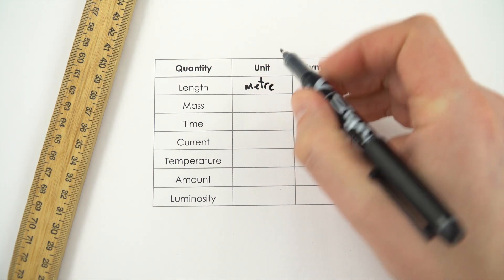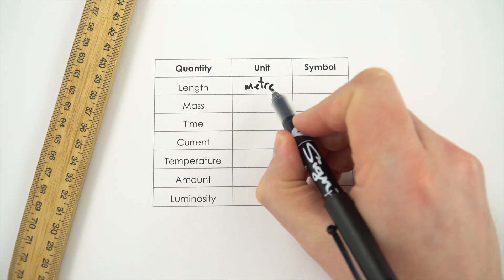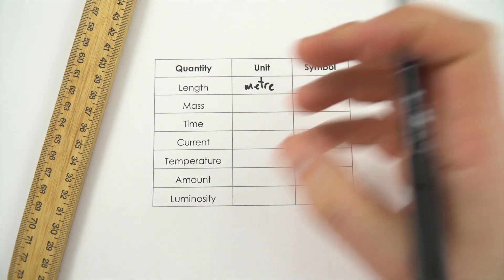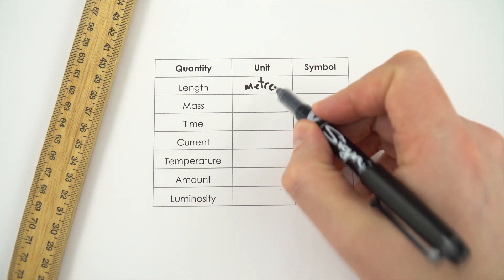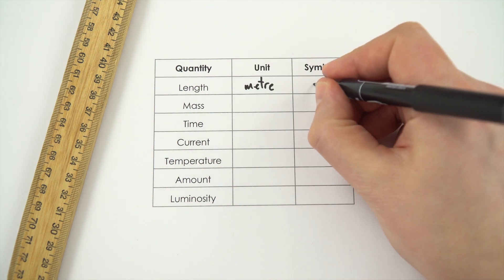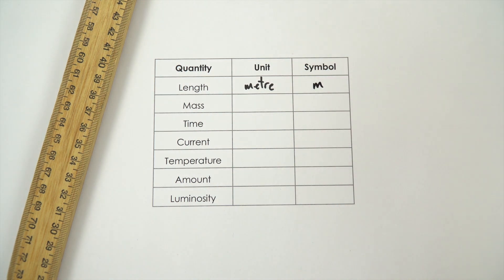Now in the UK we spell metre M-E-T-R-E but if you had a metre which was used to measure something like an ammeter or an odometer then we'd use M-E-T-E-R. Now the symbol for this is just little m. We then have mass.